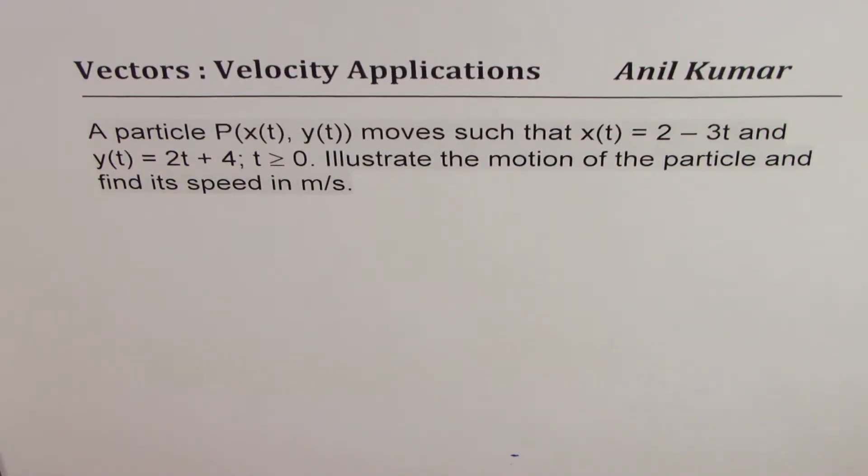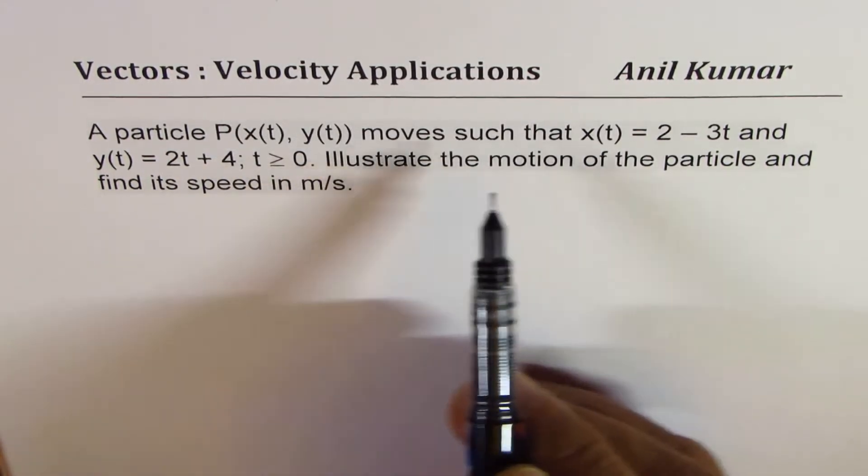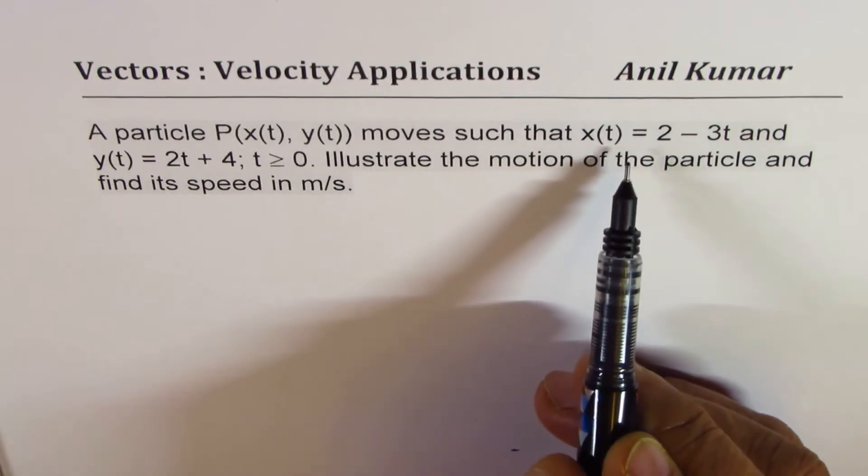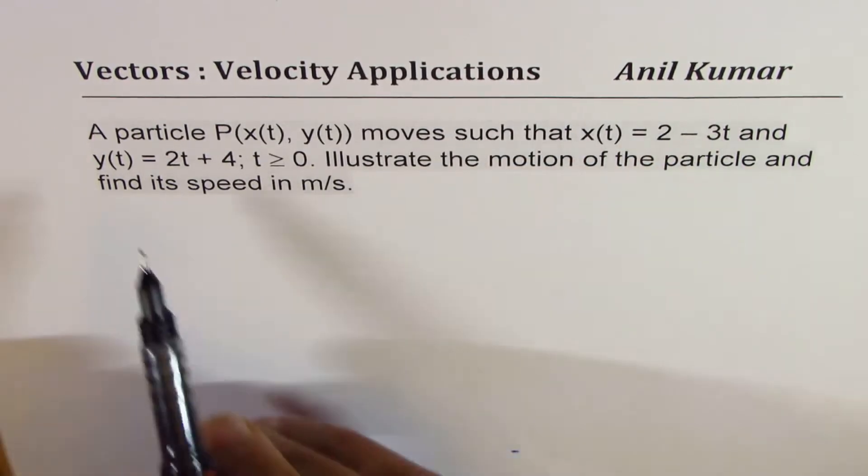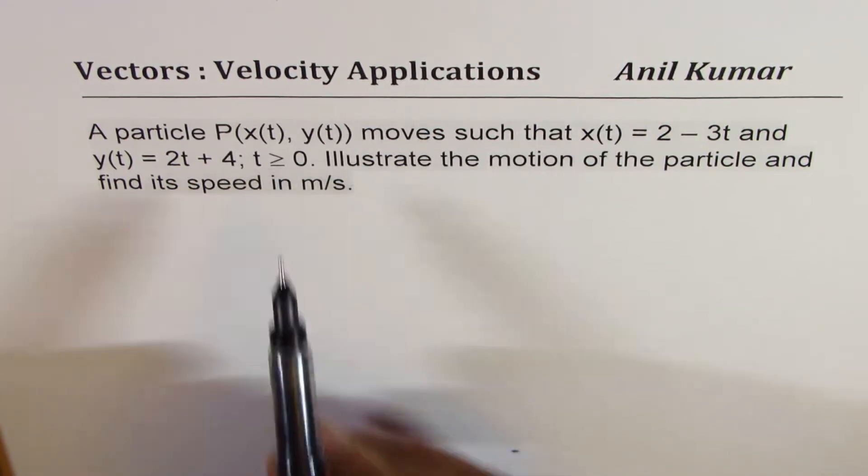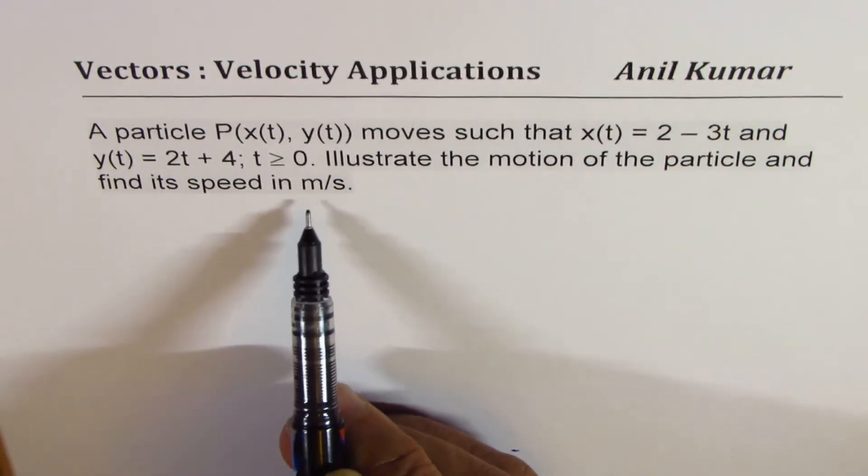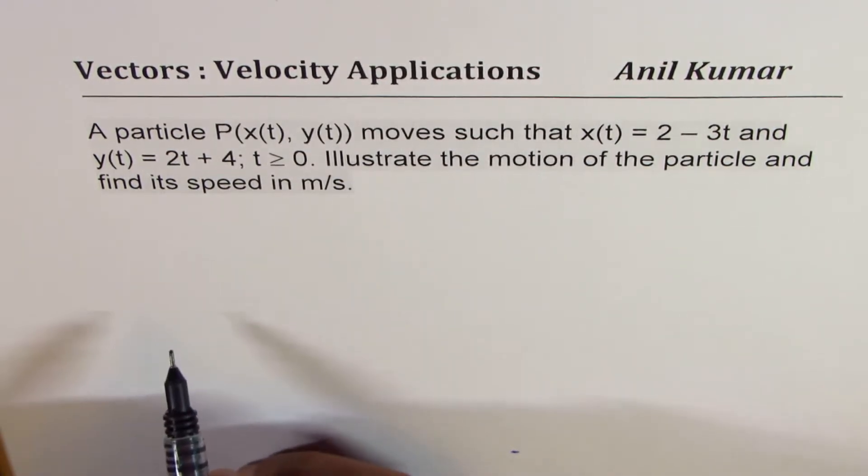I'm Anil Kumar and in this video we will learn how to represent position, displacement, and velocity in vectors. The question here is: a particle P(x(t), y(t)) moves such that x(t) equals 2 minus 3t and y(t) equals 2t plus 4, where t is greater than or equal to 0. Illustrate the motion of the particle and find its speed in meters per second.